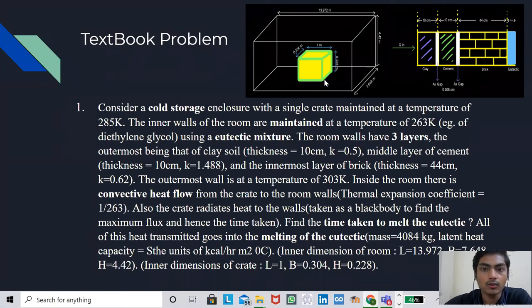As we have discussed our control volume ecosystem, now we can frame our problem statement. There is a cold storage enclosure with a single crate maintained at a temperature of 285 Kelvin. The inner walls of the room are maintained at a temperature of 263 Kelvin with the help of eutectic mixture. The room walls have three layers: the outermost is clay soil, the middle one is cement, and the third one, the innermost layer is bricks. The outermost wall is at a temperature of 303 Kelvin. Inside the room, there is a convective heat flow from the crate to the room walls and the thermal expansion coefficient for the same is 1 by 263. Also, the crate radiates heat to the walls and the crates are assumed to be as a black body so that we can find the maximum heat flux. Now we will find the time taken to melt the eutectic. All the heat transmitted is going to melt the eutectic and with the mass, the latent heat capacity, the inner dimension of rooms, inner dimension of crates are given in the problem statement.